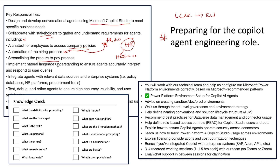Streamline whatever the process is. Implement natural language understanding — well, you don't have to implement NLU yourself; the model's already created. All you have to understand is prompt engineering and fine-tuning, and honestly, mostly just prompt engineering. Integrate agents with relevant data sources — this is easy because within Copilot they have connectors, and there are a huge number of them that connect to all the different data sources within the organization. Then test, debug, and redefine. This is a really good job description.